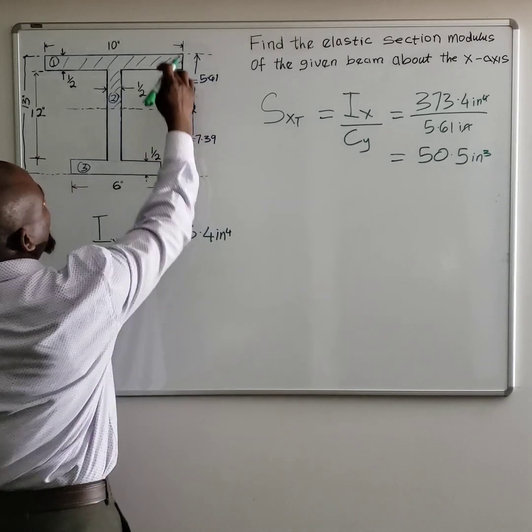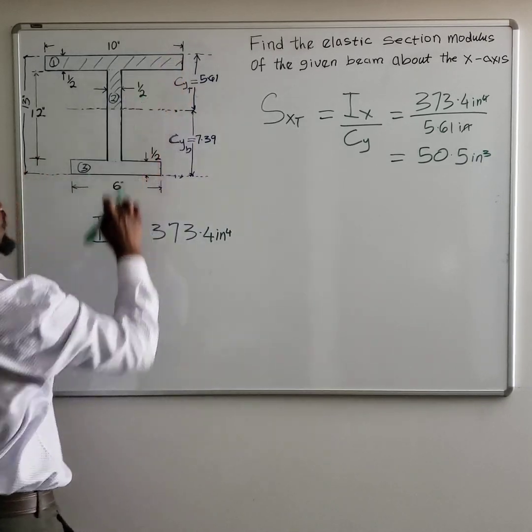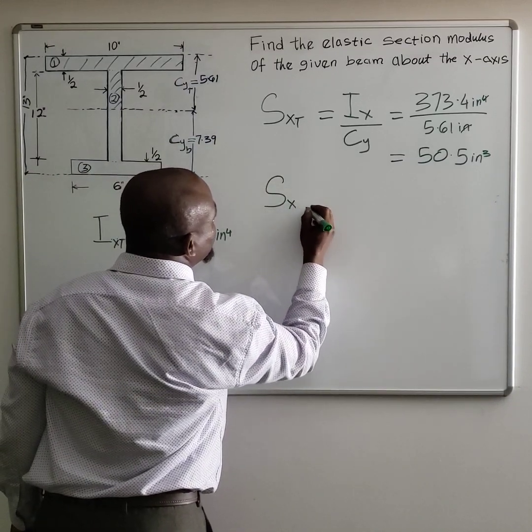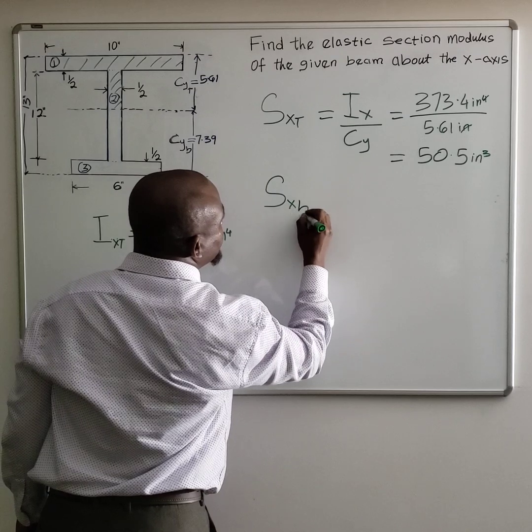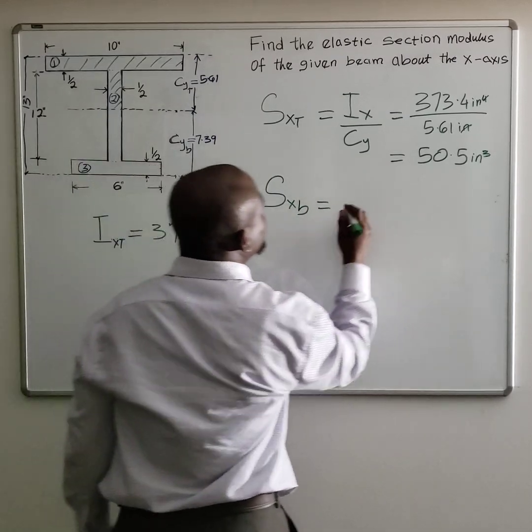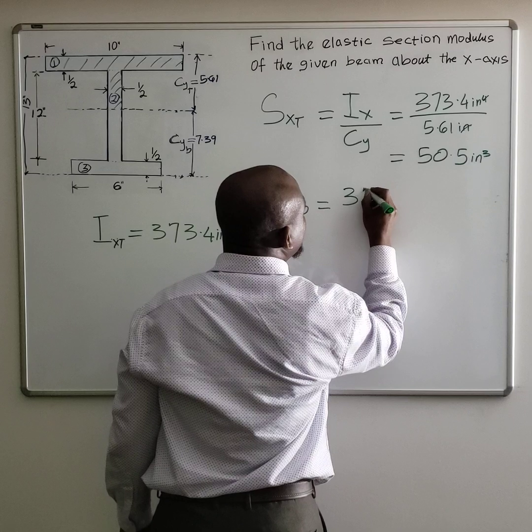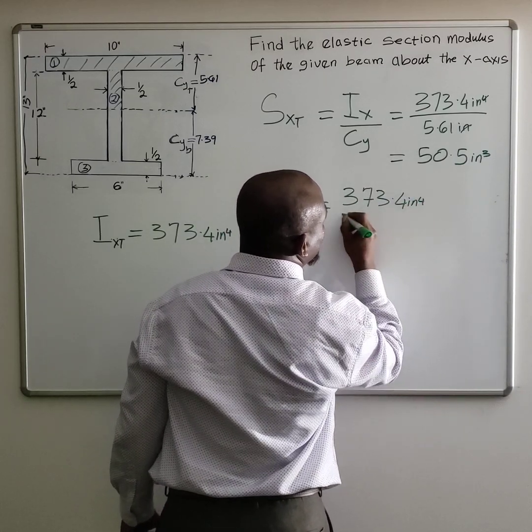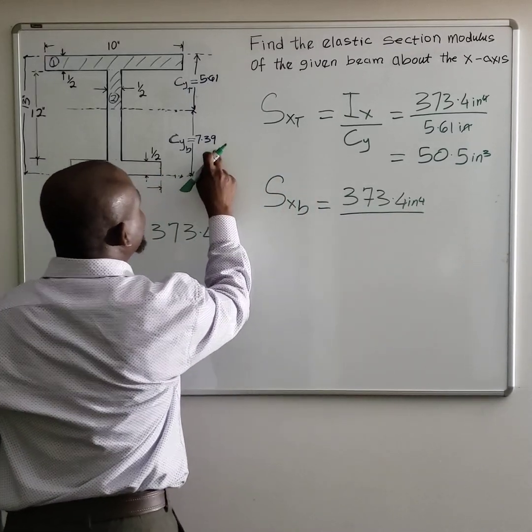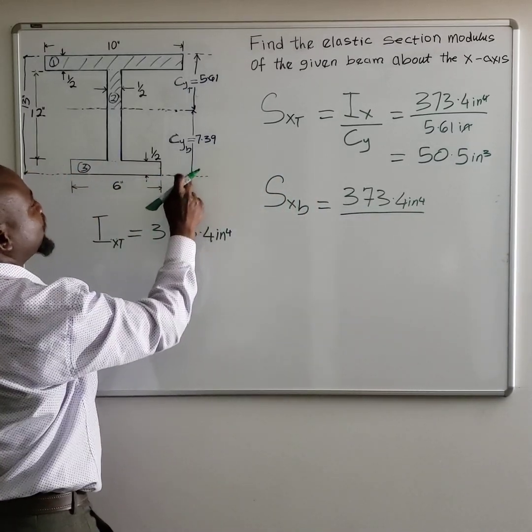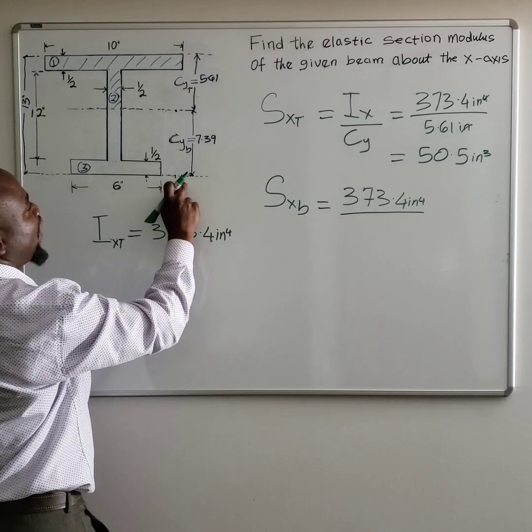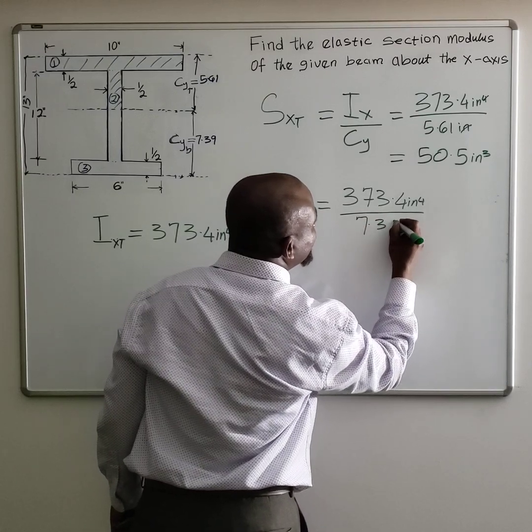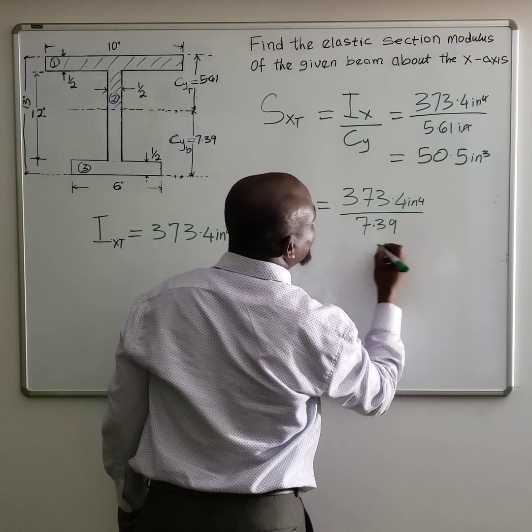Now let's look for the same from the bottom. So that will be SXB, the same moment of inertia, 373.4 inches to the fourth, divided by your centroid along the y-axis from the extreme fiber on the bottom, about 7.39 inches.